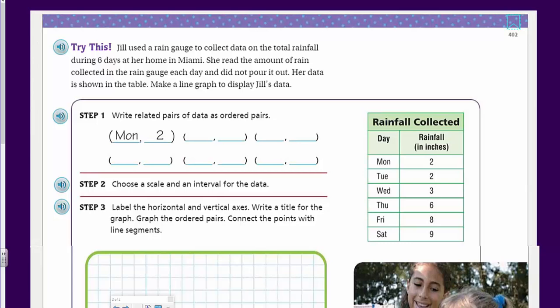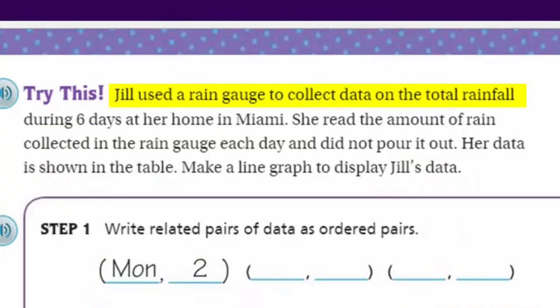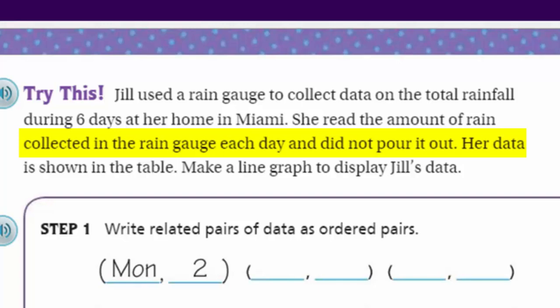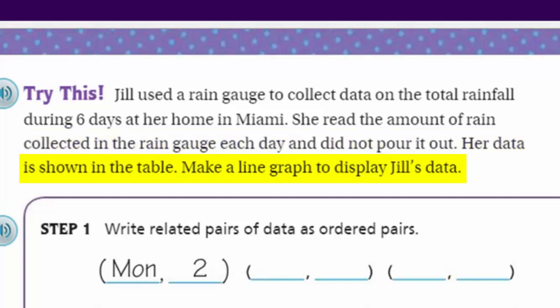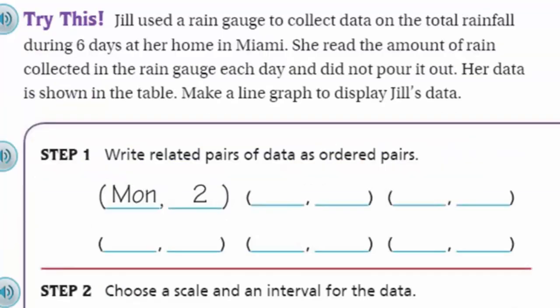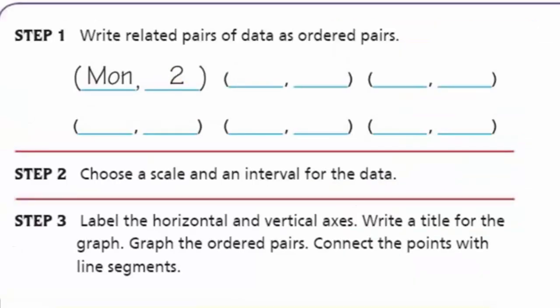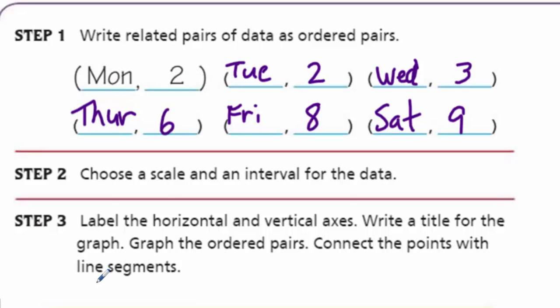Now let's try this problem. Jill used a rain gauge — a measuring tool — to collect data on the total rainfall during six days at her home in Miami. She read the amount of rain collected each day and did not pour it out. Her data is in a table showing Monday through Saturday. Make a line graph to display Jill's data. First, write related pairs of data as ordered pairs.